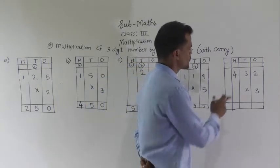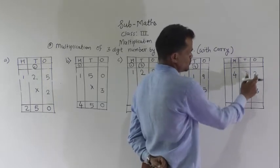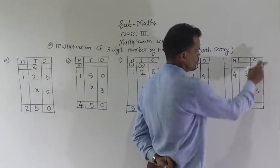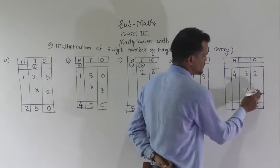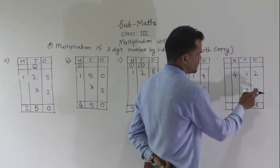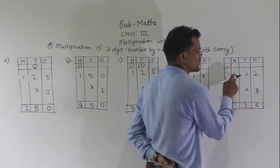Next example: 432 multiply by 3. Start from the ones place. 3 times 2 is 6. 3 times 3 is 9. Then, 3 times 4 is 12.